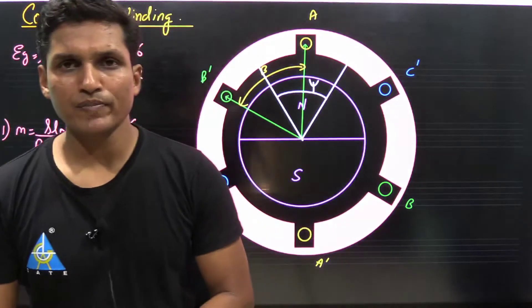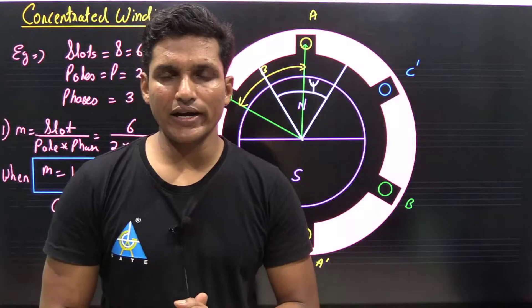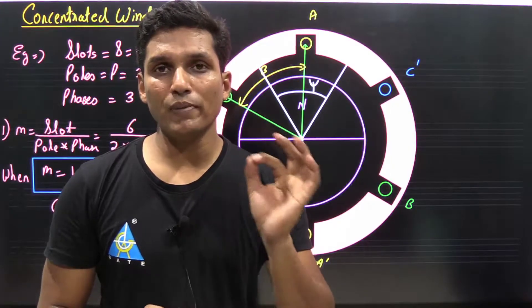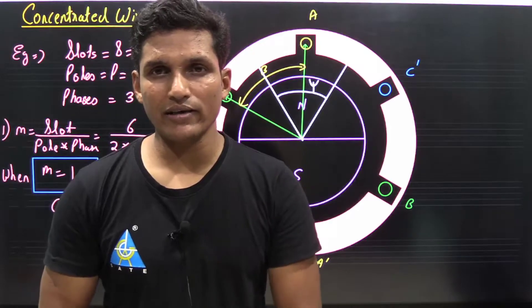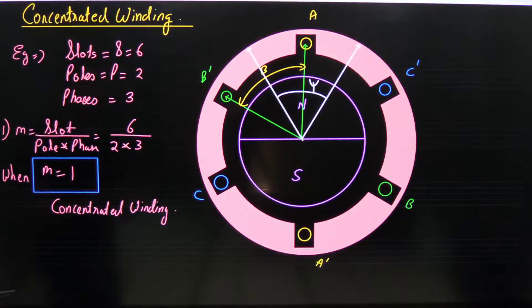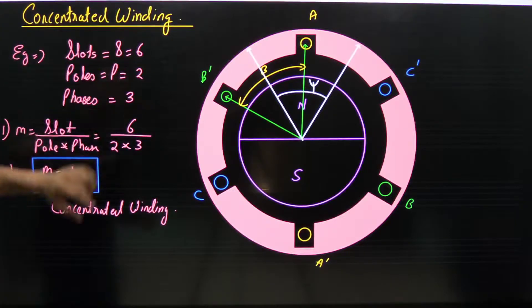Hello everyone, welcome to Gate Academy. What is concentrated winding? When slot per pole per phase is 1, then it is said to be concentrated winding. Let's see it with an example. Number of slots equal to 6, number of poles equal to 2, and phases equal to 3.